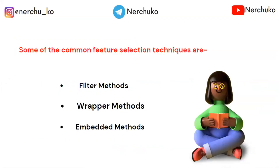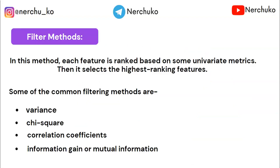There are three types of common feature selection techniques: filter methods, wrapper methods, and embedded methods. In filter methods, each feature is ranked based on some univariate metric, then the highest-ranking features are selected. Common filtering methods include variance, chi-square, correlation coefficients, information gain, and mutual information.